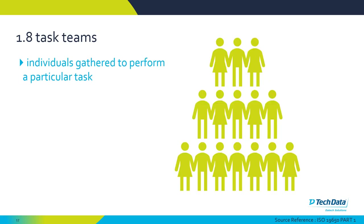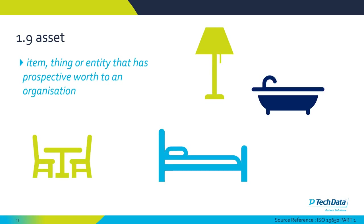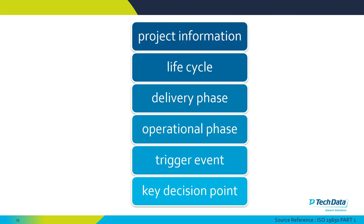Task teams are individuals brought together to perform a particular task, such as designing a building, artworks, or a drainage system — whether civil engineering, structural, or architectural. 'Assets' can be a piece of furniture, an air handling unit, a floor, or stairs — anything of value to the organisation owning or operating the building. Other terminology includes project information, life cycle, delivery phase, operational phase, and trigger events.